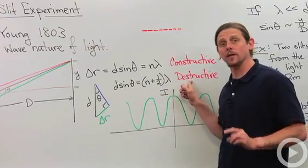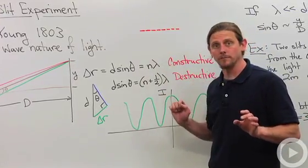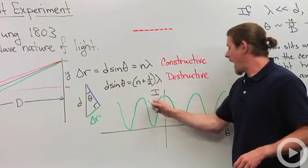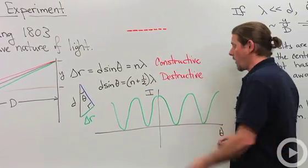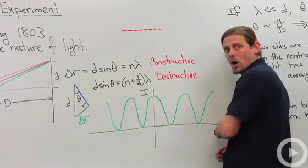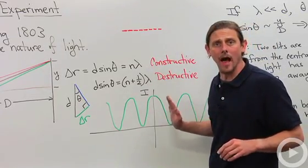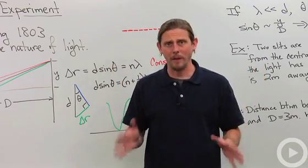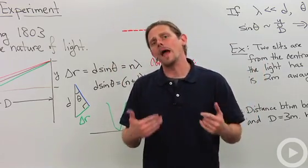now I've got destructive interference, and that's going to give me a dark spot. So if we plot the intensity that we see as a function of angle, we'll get bright spot, dark spot, bright, dark, bright, dark, and it'll just go on like that, basically uniformly until the angles get too big.